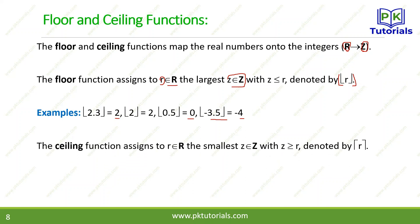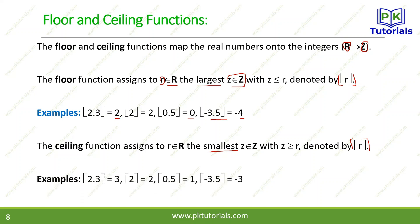The ceiling function gives the smallest integer greater than or equal to r — it takes the upper value. Ceiling of 2.3 equals 3, because the upper surrounding integer is 3. For 2.0, ceiling is 2 since it's already an exact integer. For −3.5, ceiling is −3. These are some examples of the floor and ceiling functions.